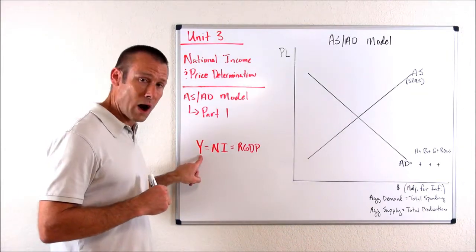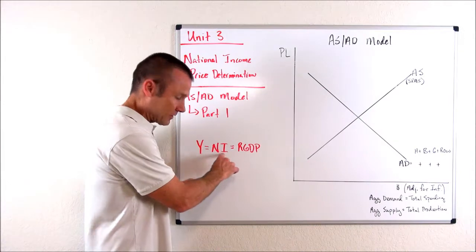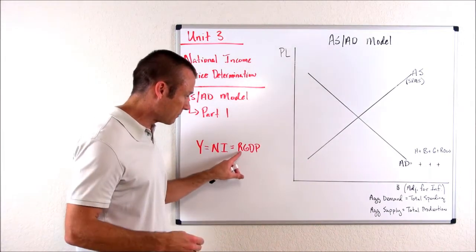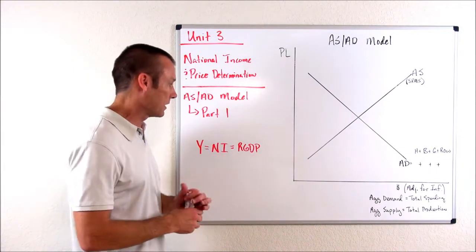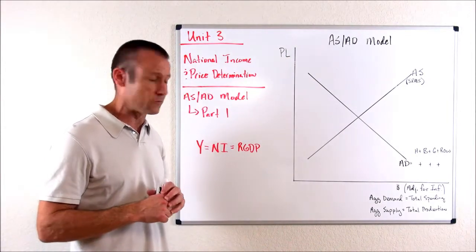We're going to use this symbol Y. I just want you to understand that I'm not actually going to say national income all the time. I'm probably going to more often say real GDP.